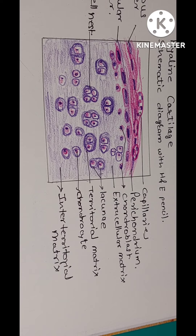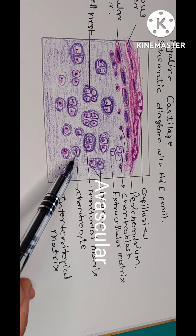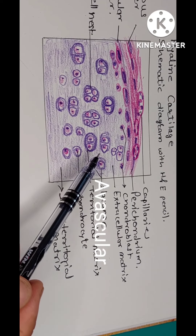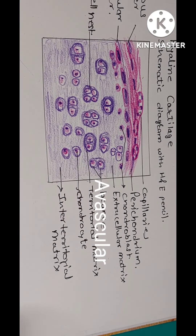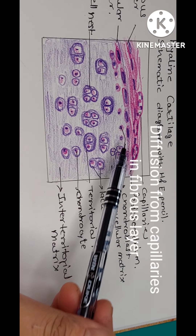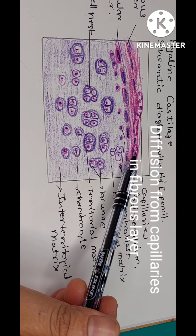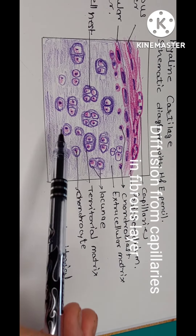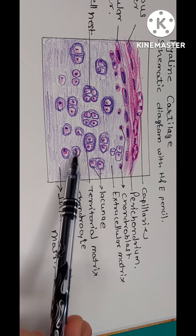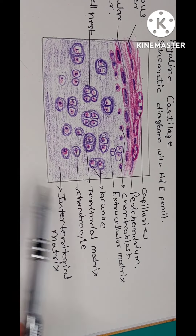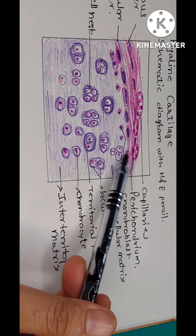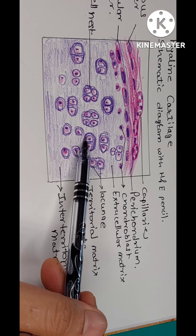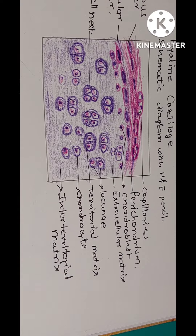You can see there is no blood vessel inside this cartilage, so it is an avascular structure. The cartilage cells derive their nutrition by diffusion, as the water content of the cartilage is almost 70 to 80 percent.